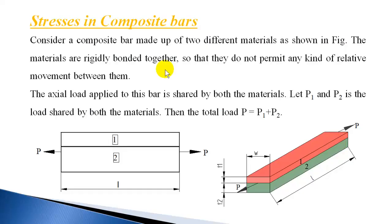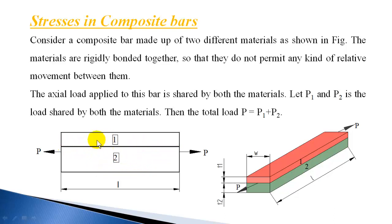What is a composite bar? It is a combination of two materials which are rigidly bonded. Let us consider materials which are bonded parallely and their lengths are equal. Composite bars can also be serially connected, where one material is connected at the end of another material.